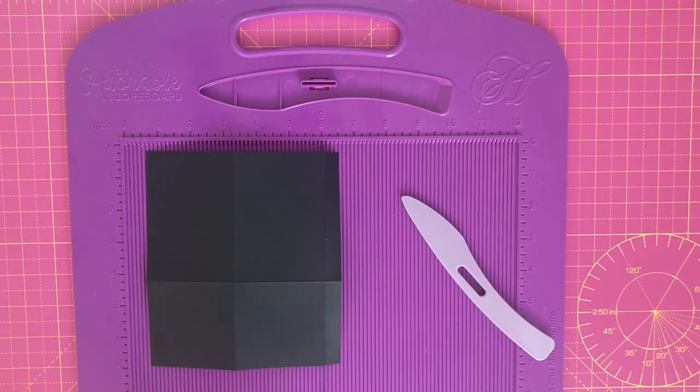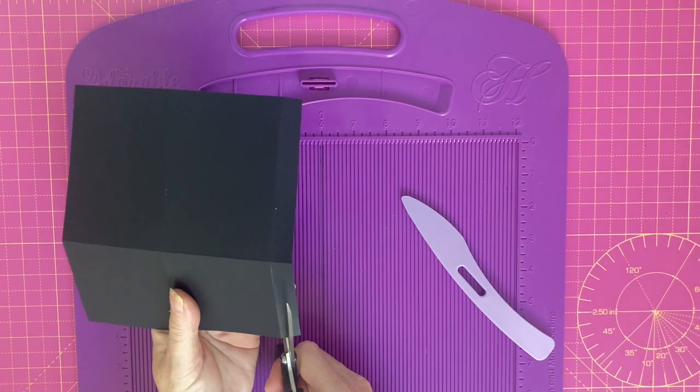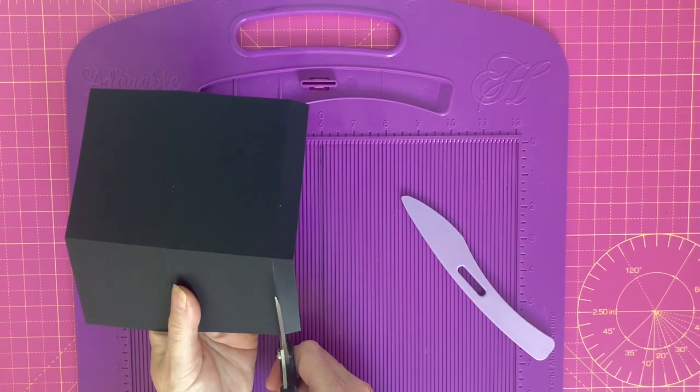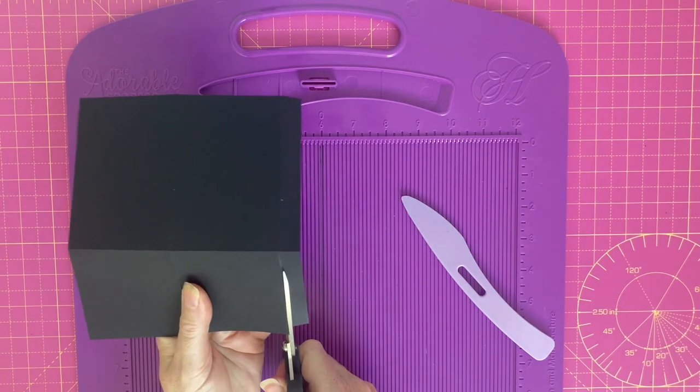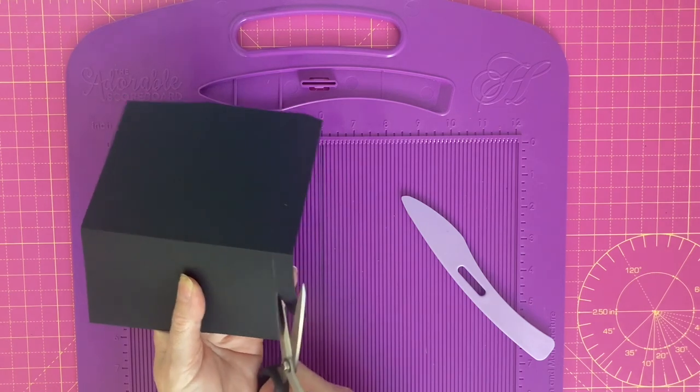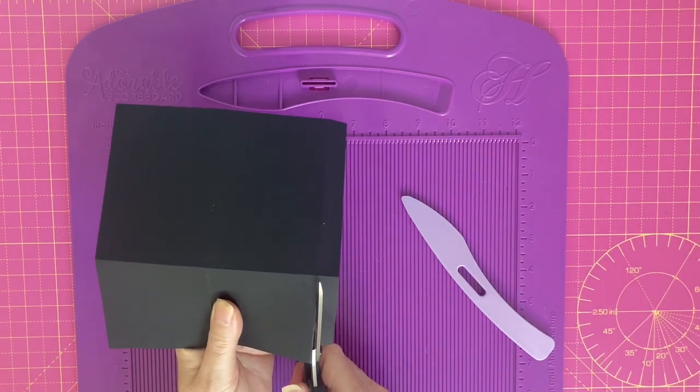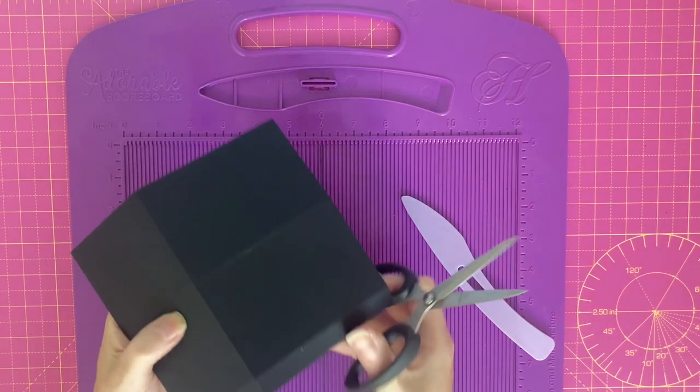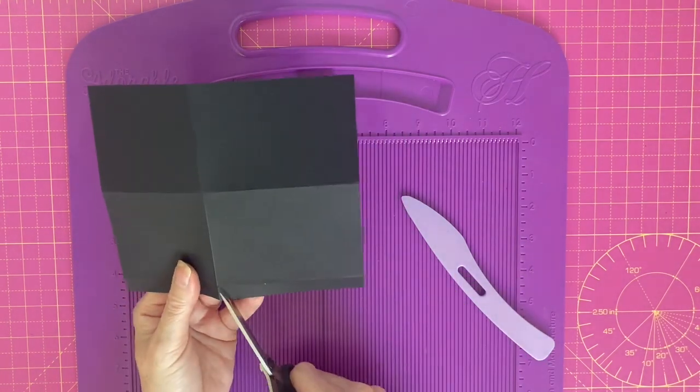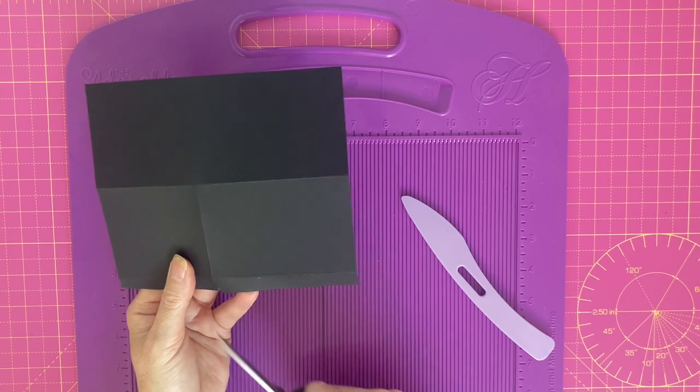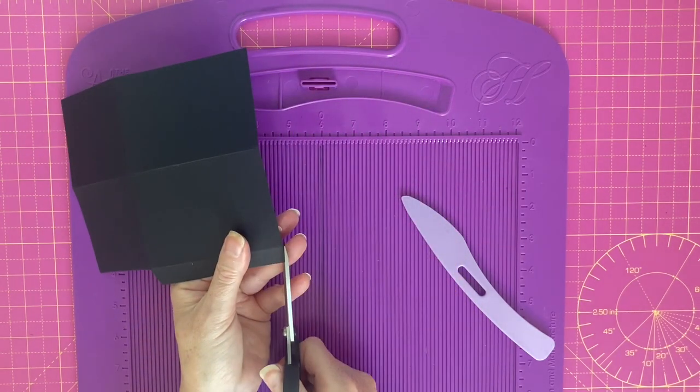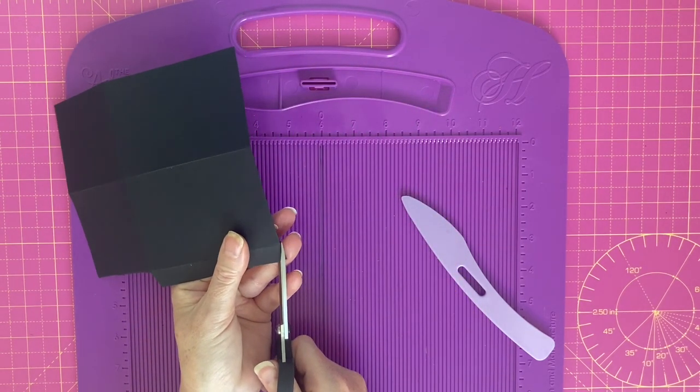On each piece we're going to cut away the bottom rectangle on the half inch tab and we're going to cut a wedge into the top rectangle of the half inch tab, and we're going to do that on both pieces.